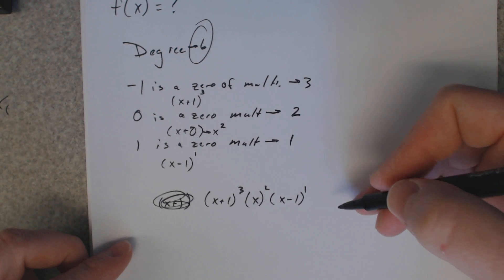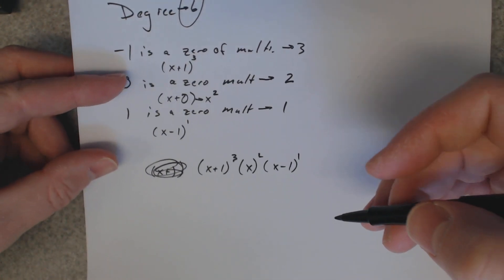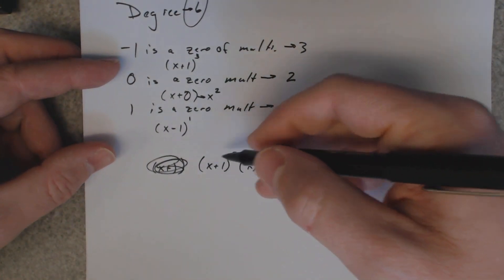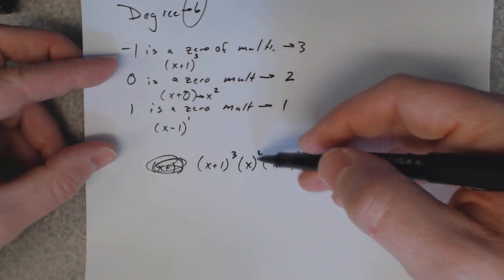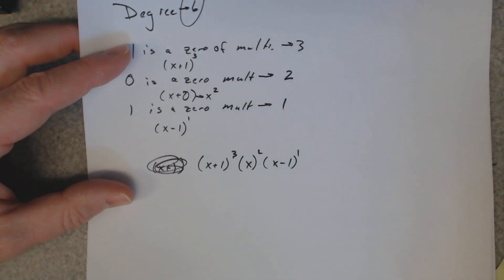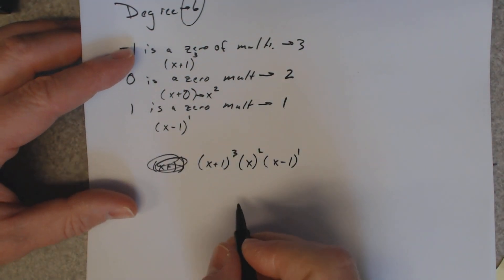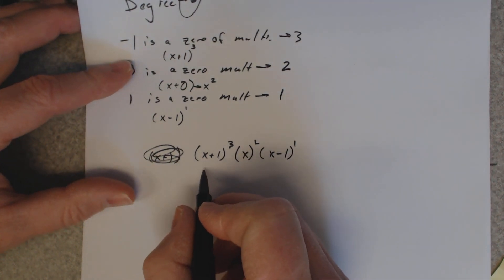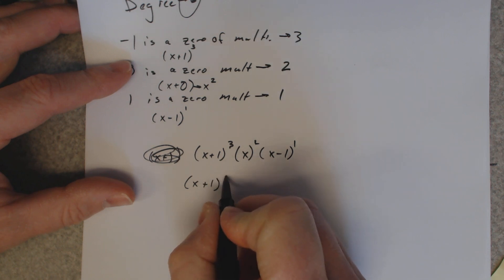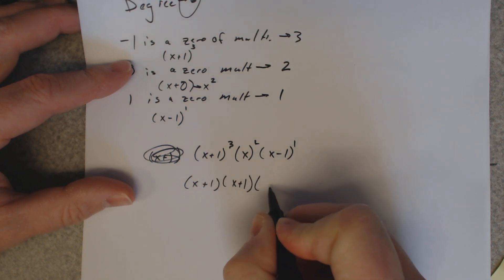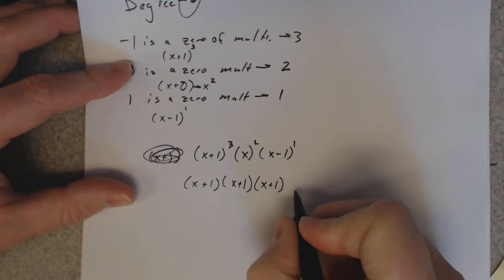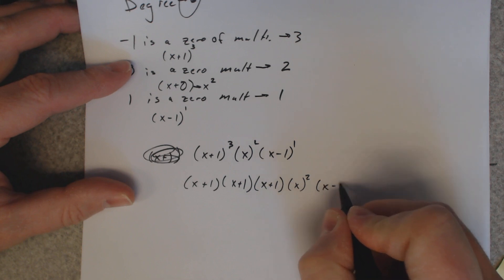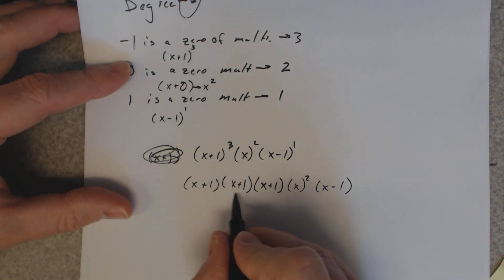So now I need to multiply this all out. It says use 1 for a leading coefficient, so I don't have to put any numbers in the front or anything like that. So that's not going to worry about the coefficients, leading coefficients. So let's try this: x plus 1 times x plus 1, I'm going to write it out in expanded form times x, I'm just going to do that as x squared times x plus 1.